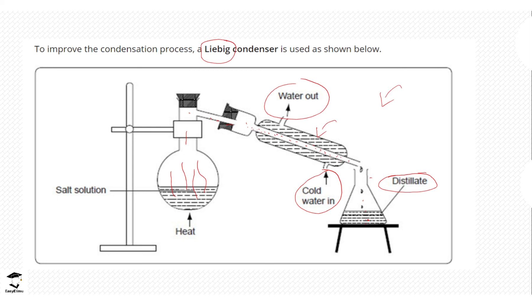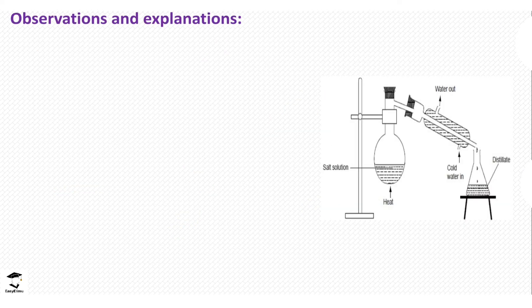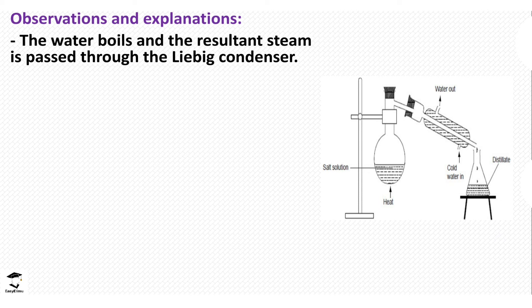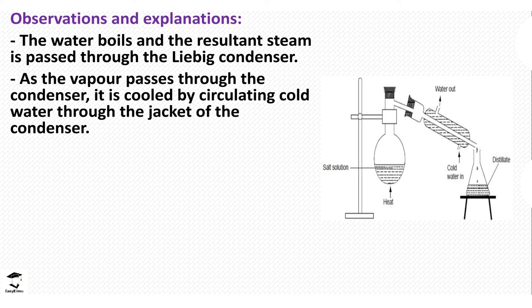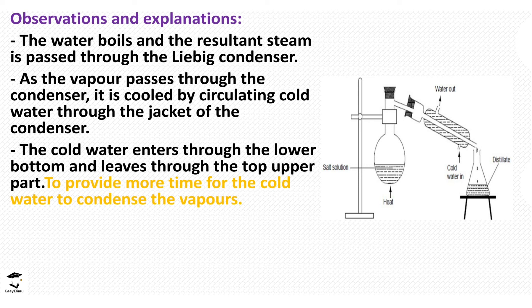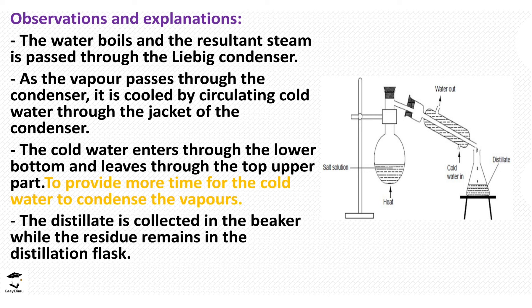To summarize the observations: the water boils, turns into steam, enters the Liebig condenser, and cools down. The water flows in the opposite direction to allow enough cooling and to increase the surface area for condensation — it moves slowly to allow enough time for the vapors to condense — and then we collect the distillate.